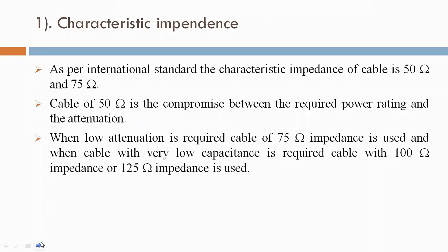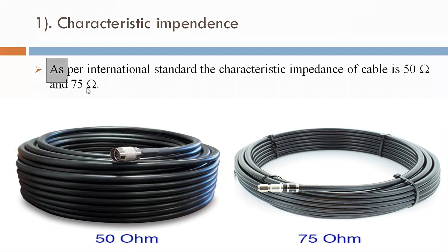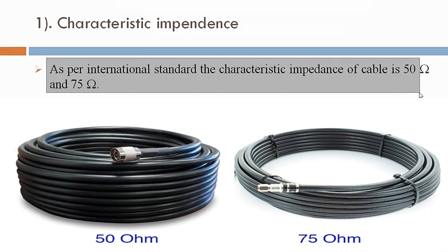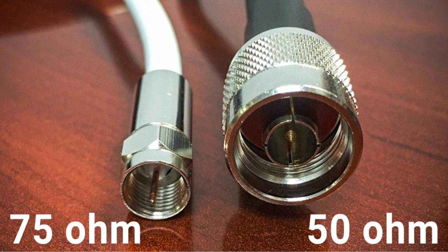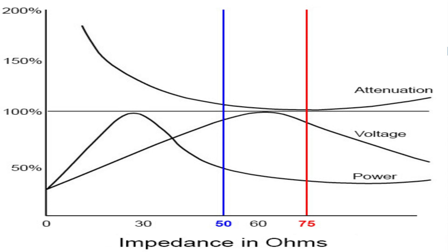First, characteristic impedance. As per international standard, the characteristic impedance of cable is 50 ohm and 75 ohm. Cable no characteristic impedance, the international standard krama ne, 50 ohm ane 75 ohm chay.